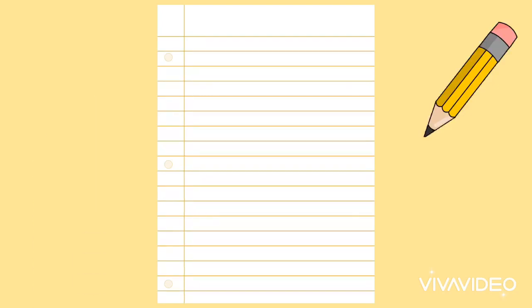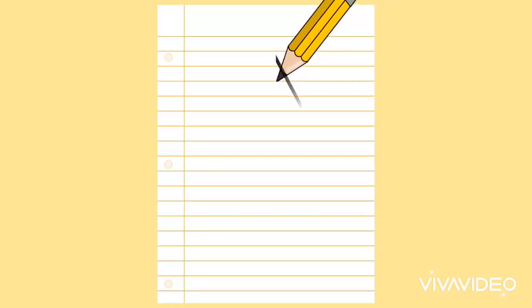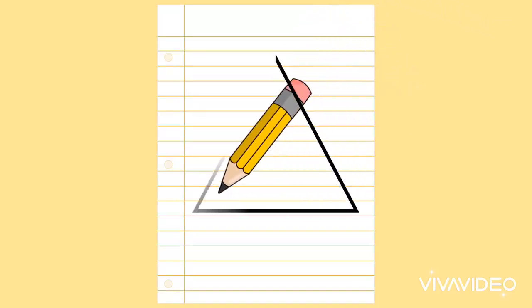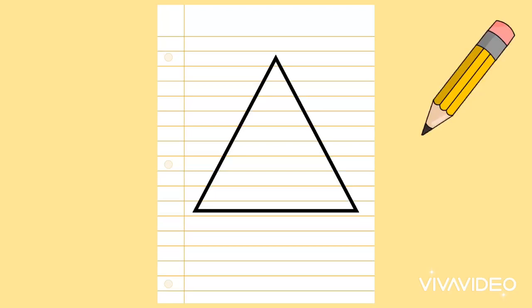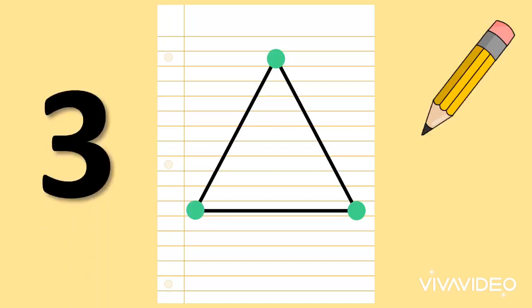What shape am I drawing? A triangle. And how many corners does a triangle have? Let's count. One, two, three. That's right, three corners.